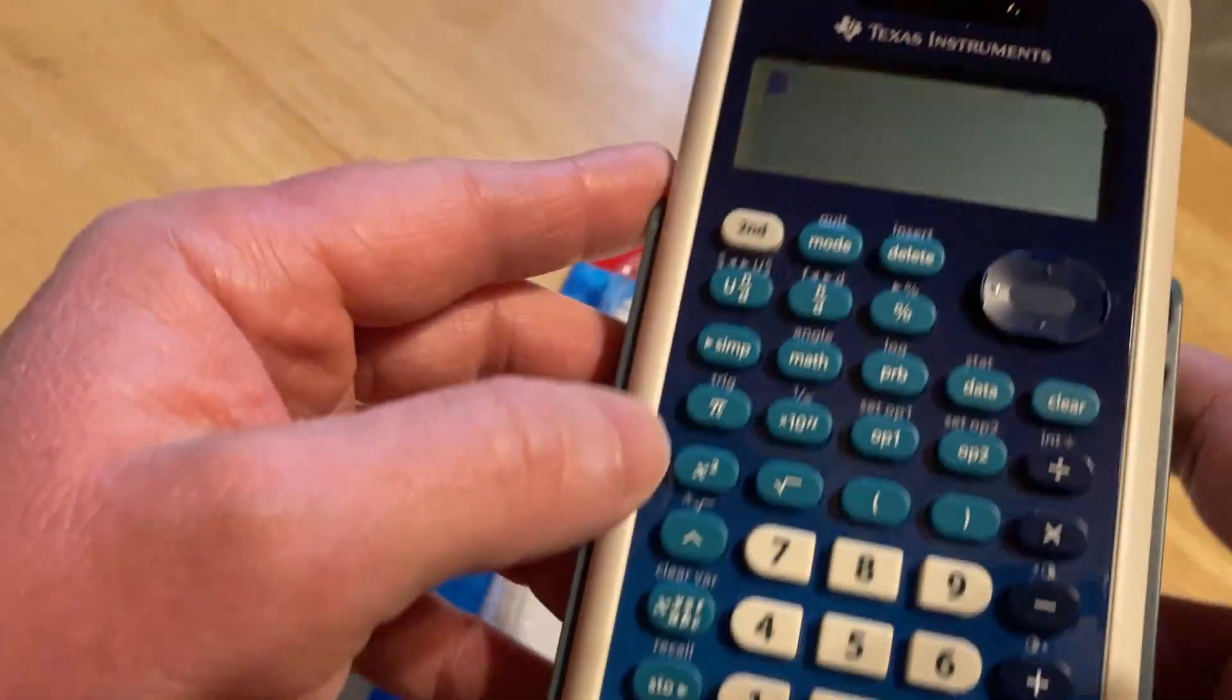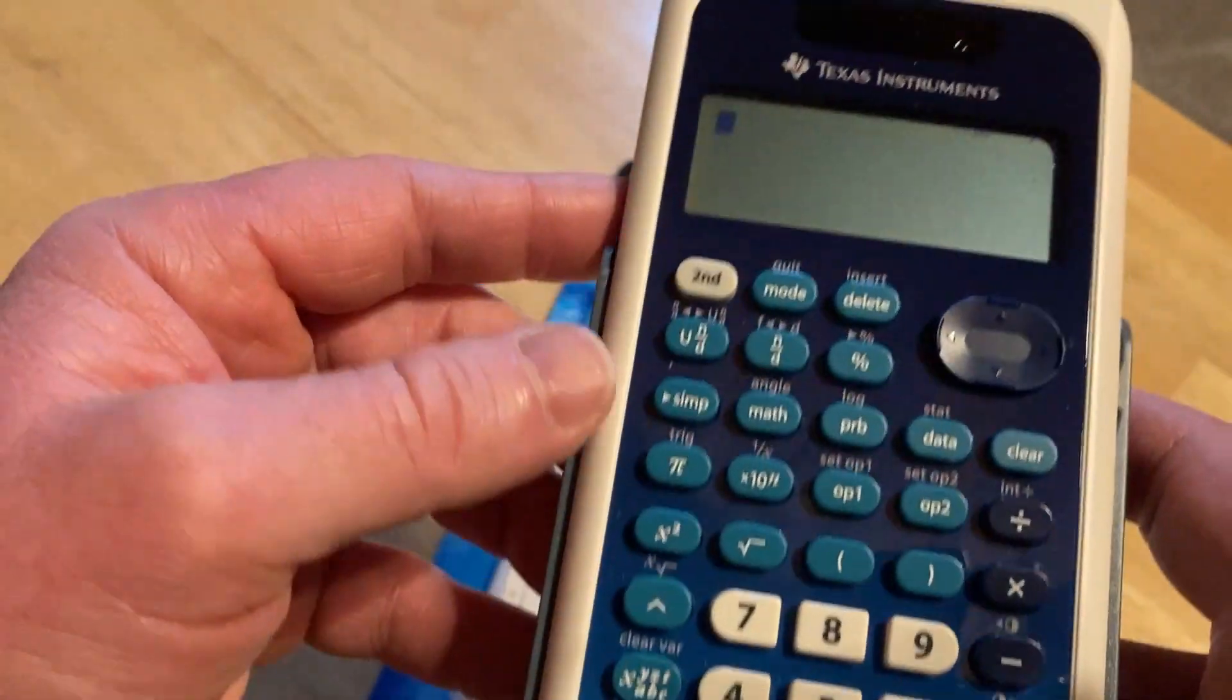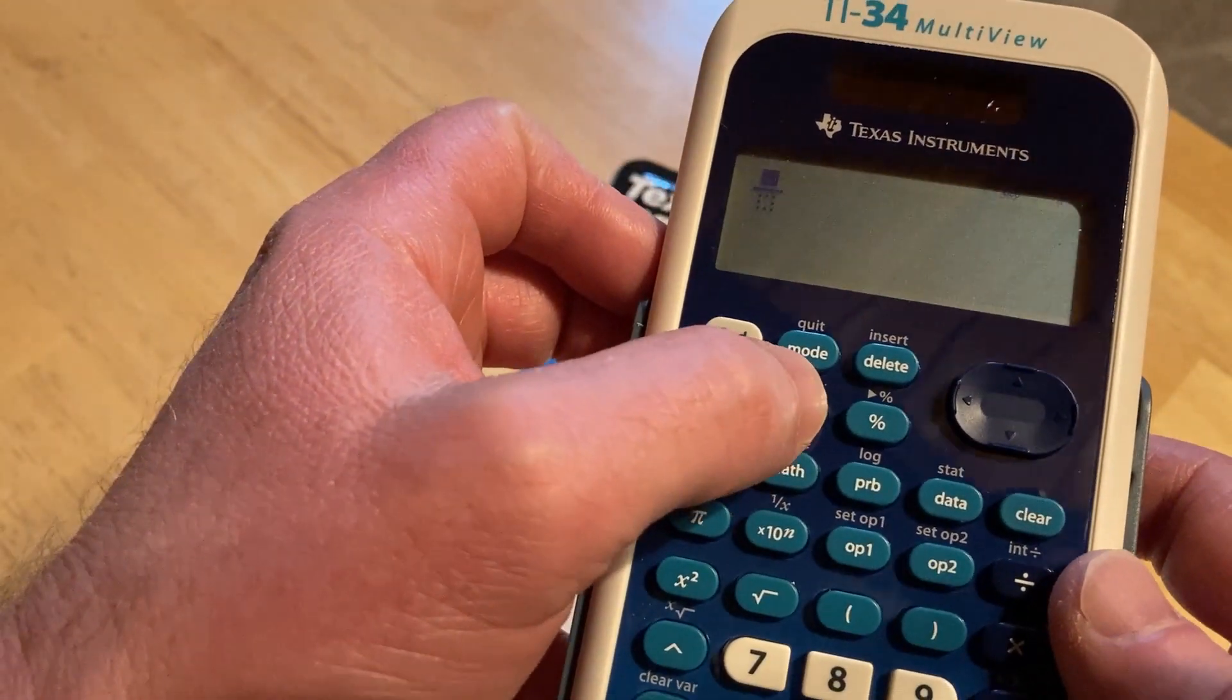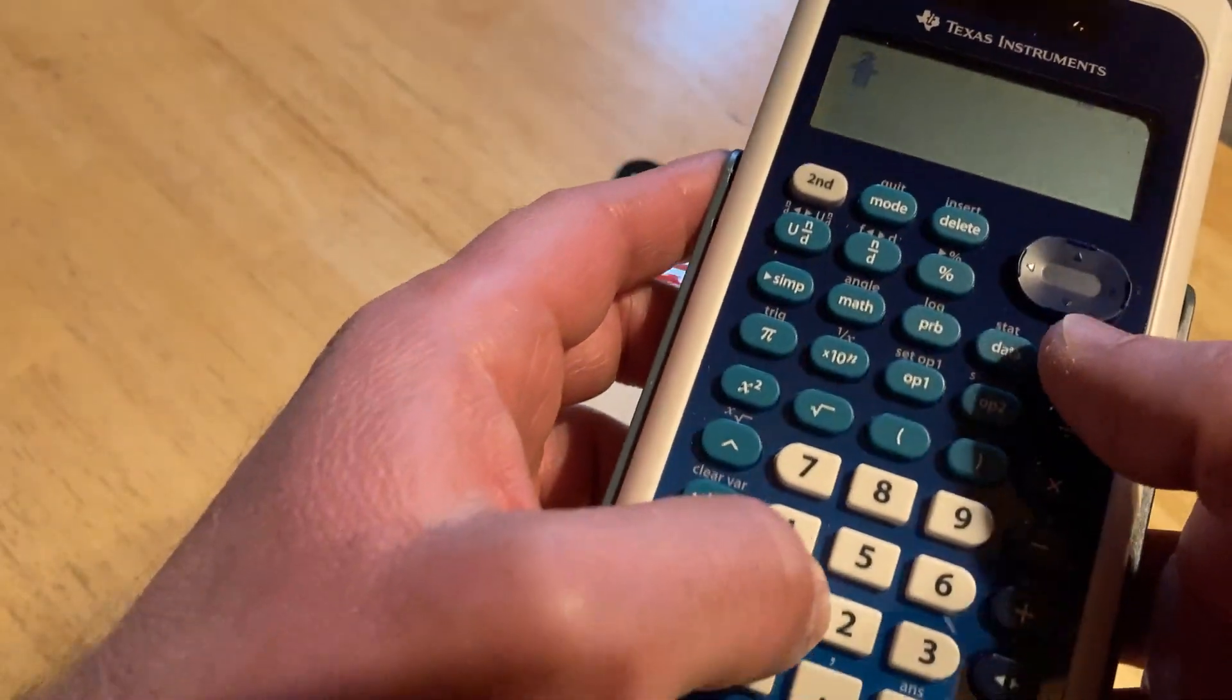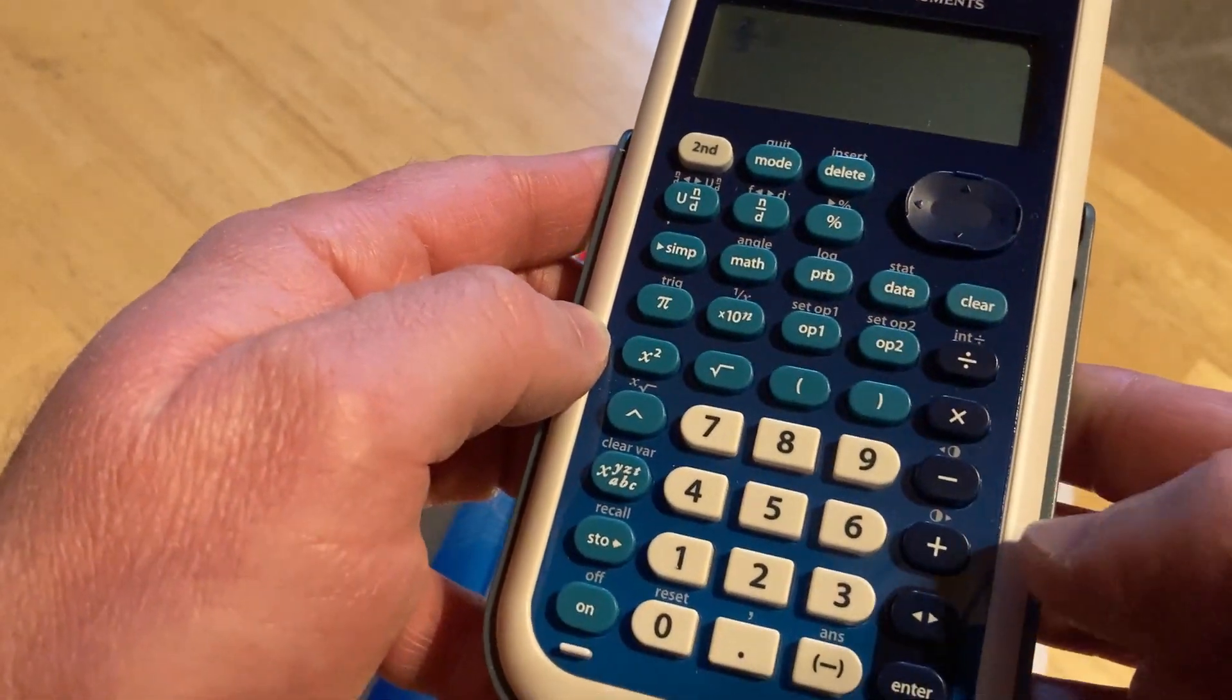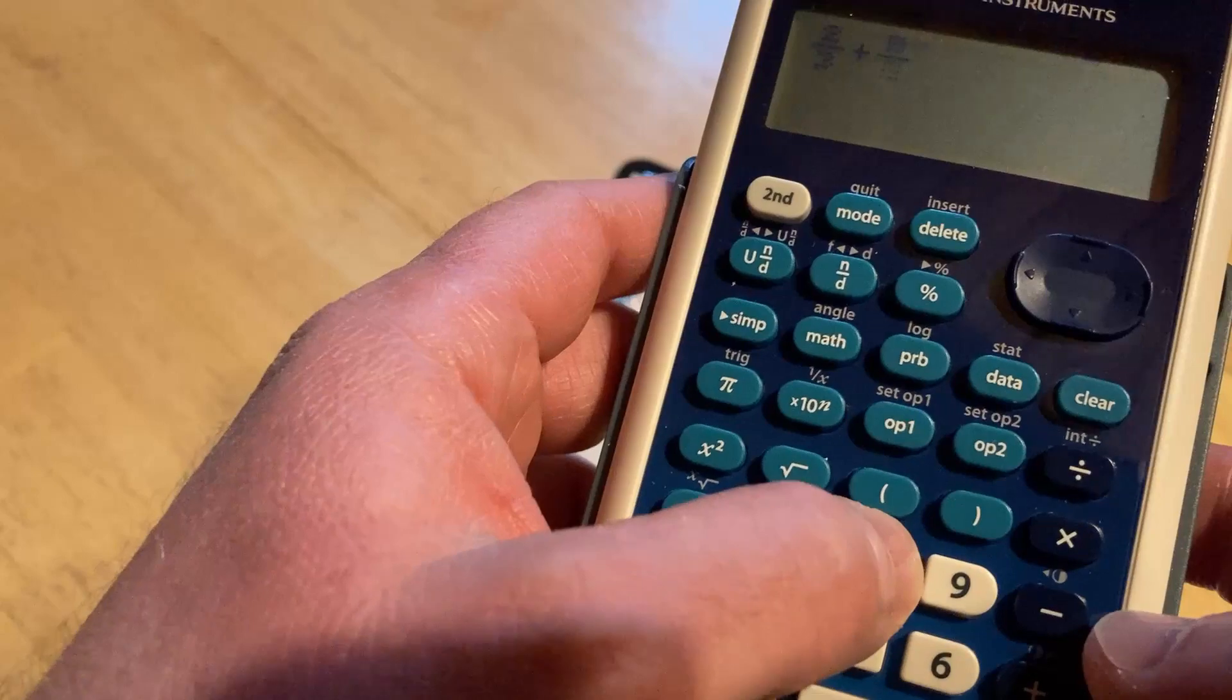Let's do fractions. Watch this. I'm going to hit this here, so I'm going to do two, then down, then three. Okay. Then I'm going to hit plus, and then I'm going to hit this again. Let's do eight, down, and five.